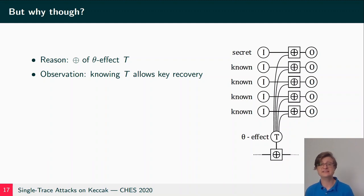And as an observation, we have that knowing T, the theta effect, allows key recovery in our setting. And as it turns out in our setting, four of the input nodes of such an XORing of the theta effect T are known - these are public input - and one of the inputs is secret. In the all-zero input, we add this theta effect T onto four times zero. We have the same operation four times. The best we can do is averaging.